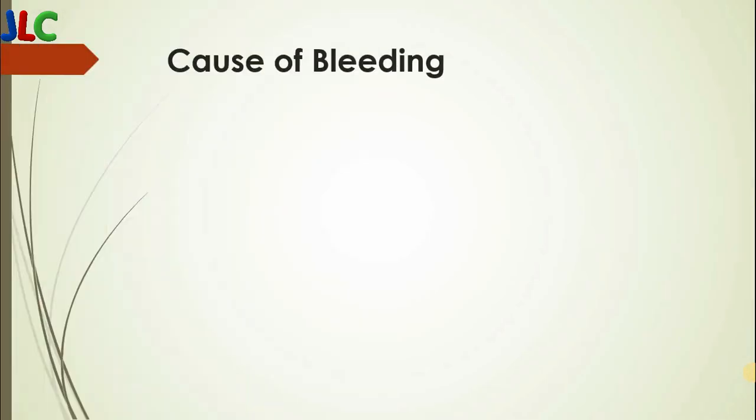Cause of bleeding: High water-cement ratio. If the water amount is more — that is, the water-cement ratio is high — then bleeding occurs in concrete.